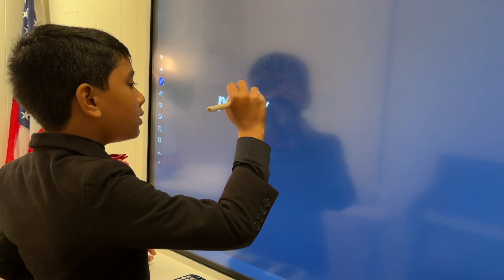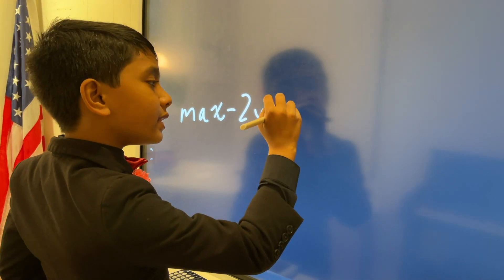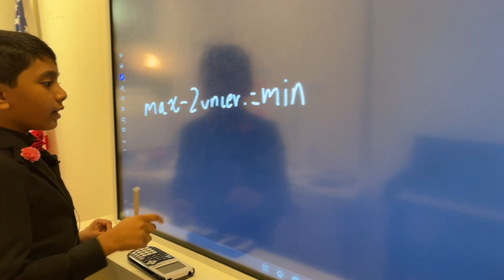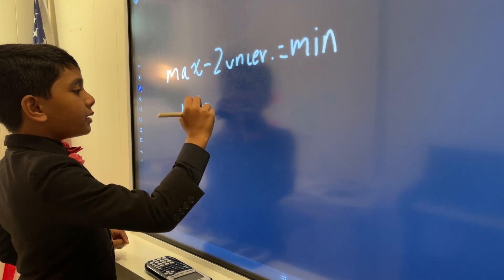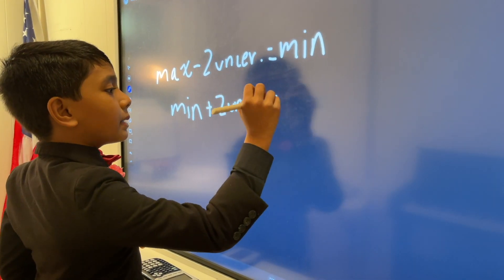That means that we can actually make a handy equation. The maximum minus 2 times the uncertainty is equal to the minimum. Or, if we wanted to try it the other way around, the minimum plus 2 times the uncertainty is the max.